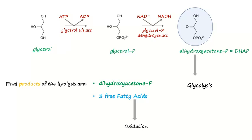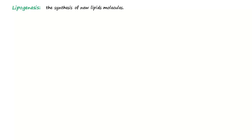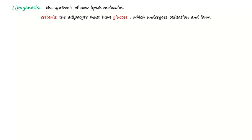On the other hand, there is lipogenesis. Lipogenesis consists in the synthesis of new lipid molecules. The criteria for lipogenesis is the presence of glucose, which undergoes glycolysis and produces dihydroxyacetone-phosphate — needed for triglyceride synthesis — and acetyl-CoA, needed for fatty acid synthesis.